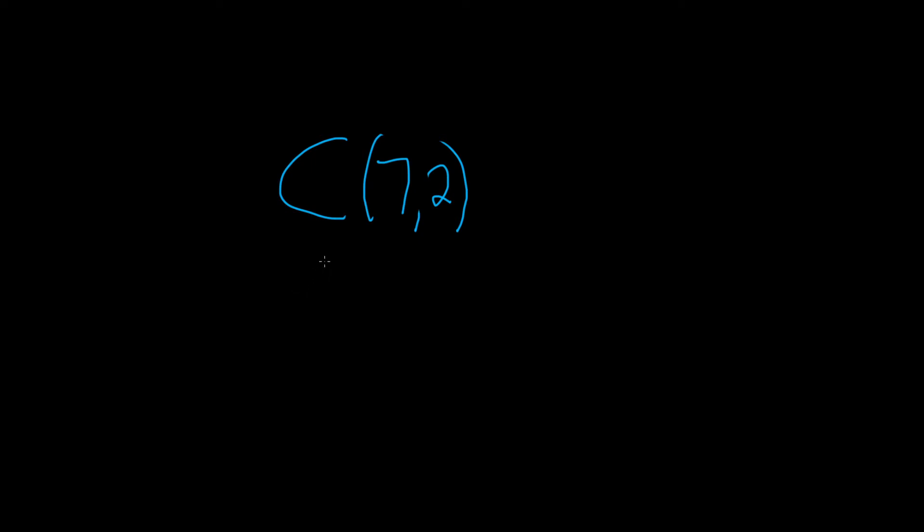In this problem, we have to evaluate C(7,2). Other notation for this would be n choose r, or in this case, 7 choose 2.